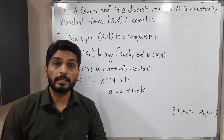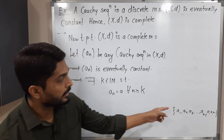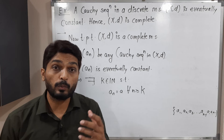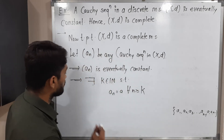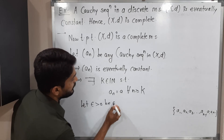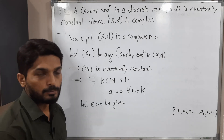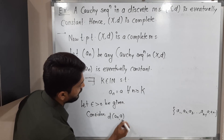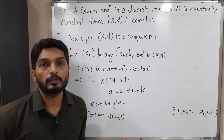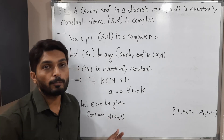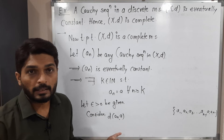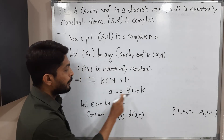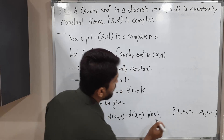We have shown it is eventually constant. Our target is to prove it is convergent, so I will prove the sequence a_n converges to the same point a. We are familiar with the definition of convergent sequence. Let epsilon > 0 be given. Consider d(a_n, a). If this is less than epsilon then we can declare a_n converges to a. My target is to prove d(a_n, a) < epsilon. Since a_n = a for n ≥ k, I replace a_n with a.